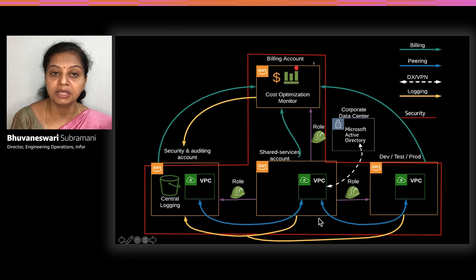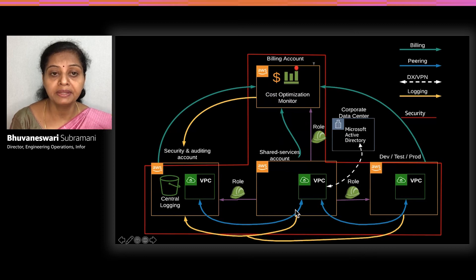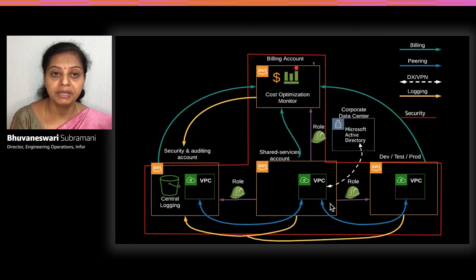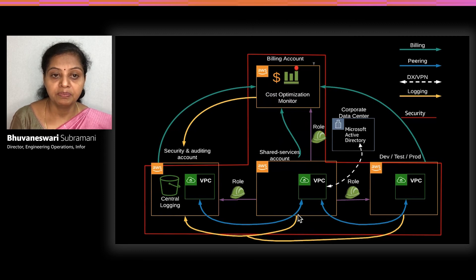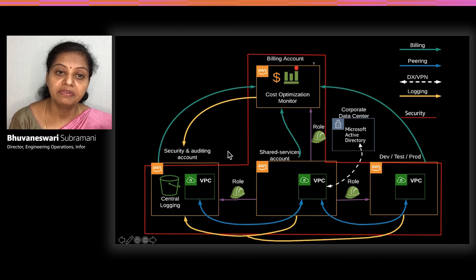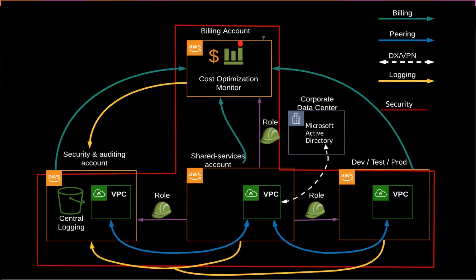The shared services account can be used to deploy critical or shared services — such as CI/CD services or Active Directory for authentication — which can be used by different accounts. To share resources between your AWS account and the corporate data center, you have two options: establish a VPN connection between the AWS account and the corporate data center, or establish a Direct Connect dedicated connection from the corporate data center to AWS, available as either a 1 Gbps or 10 Gbps dedicated line. IAM is everywhere — the red line indicates IAM covers all accounts and takes care of security.